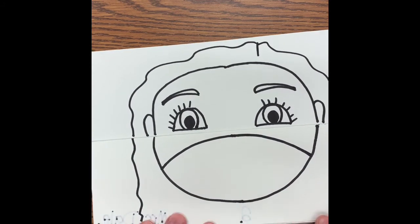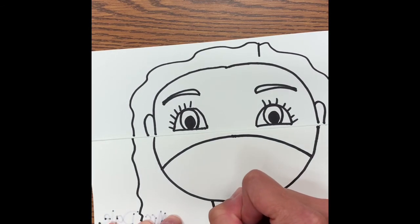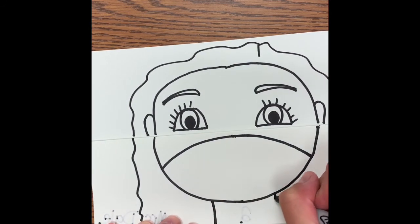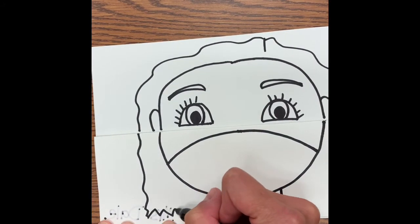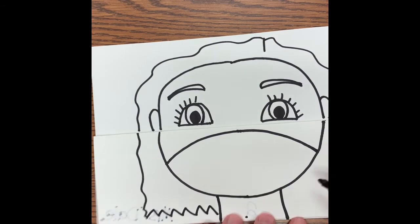And you know what? We forgot one thing. We forgot our neck because we don't want to have a floating head. So I'm going to go ahead and draw two lines down, one on each side of my chin for my neck. And then I'm going to finish my hair off right here.